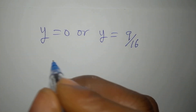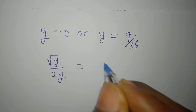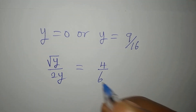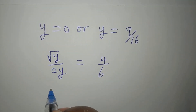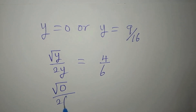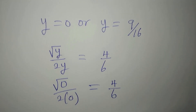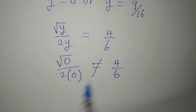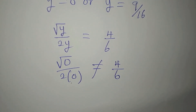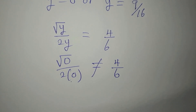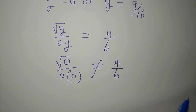The original equation is square root of y over 2y equals 4 over 6. If we put y equals 0, we get square root of 0 over 2 times 0, which means we are dividing 0 by 0. That does not exist — dividing by zero is undefined.